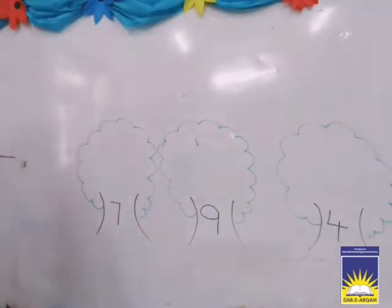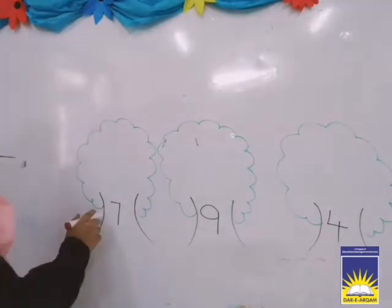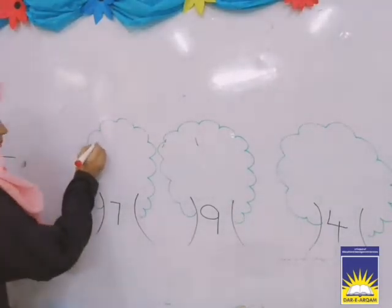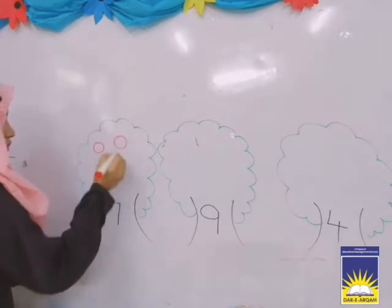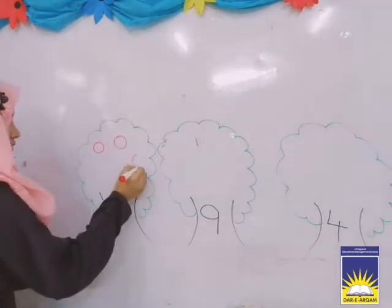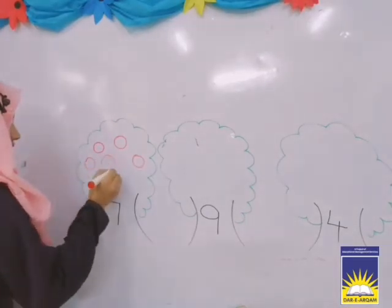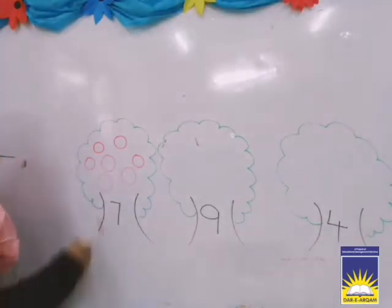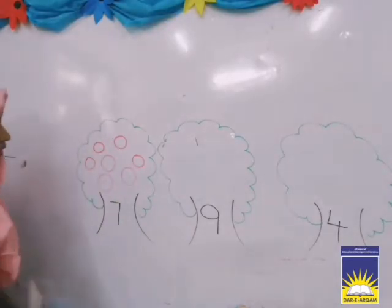Now I have to make oranges. On this tree I have to make 7 oranges. Count with me: 1, 2, 3, 4, 5, 6, 7. This is number 7 and these oranges are 7. Okay?